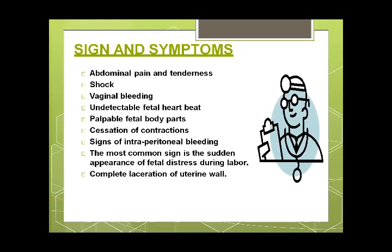Signs and symptoms of uterine rupture include: abdominal pain and tenderness; shock; vaginal bleeding; undetectable fetal heartbeats; and palpable fetal body parts through the abdomen — because once the uterine wall integrity is lost, fetal parts can be directly felt. There is also cessation of uterine contractions and signs of intraperitoneal bleeding.